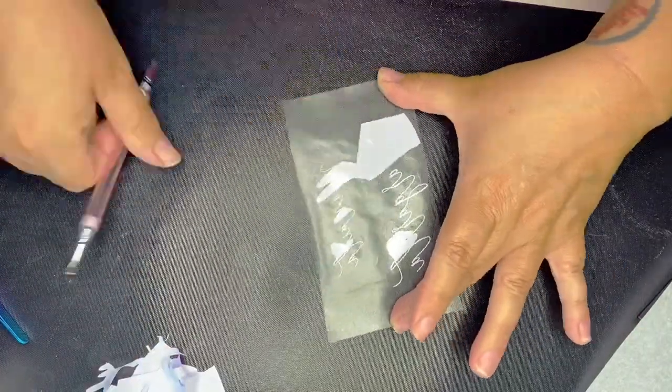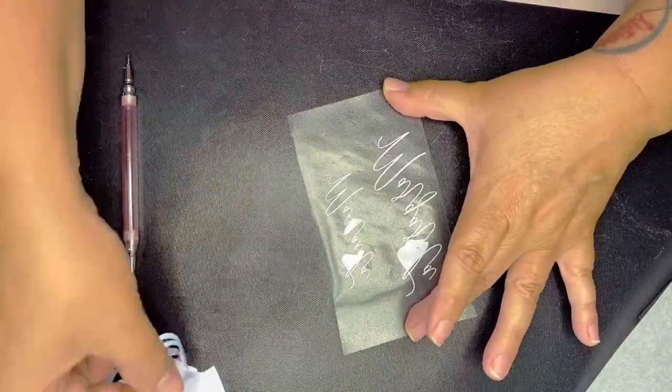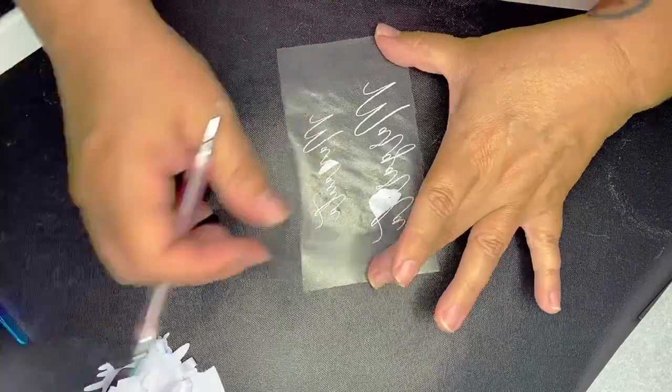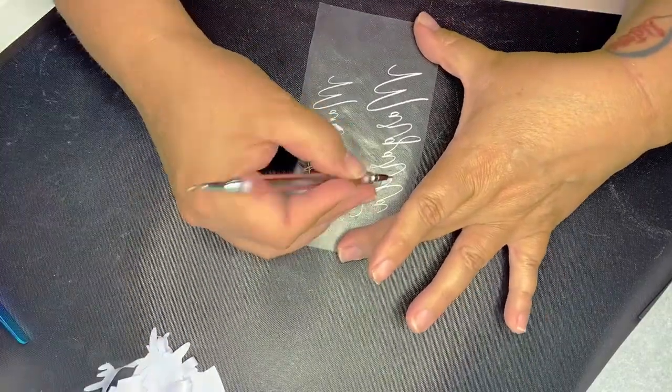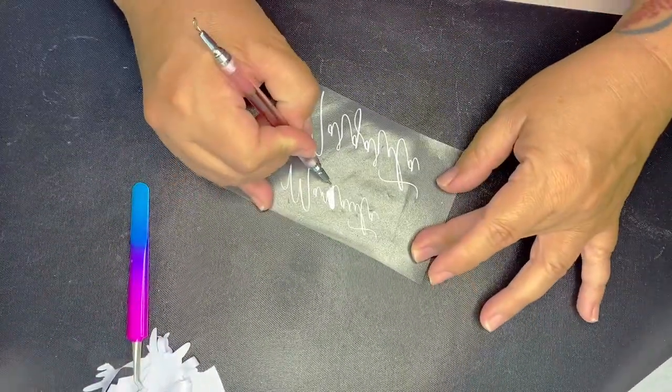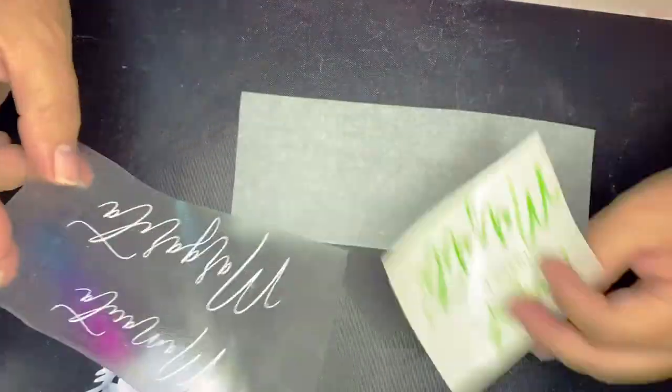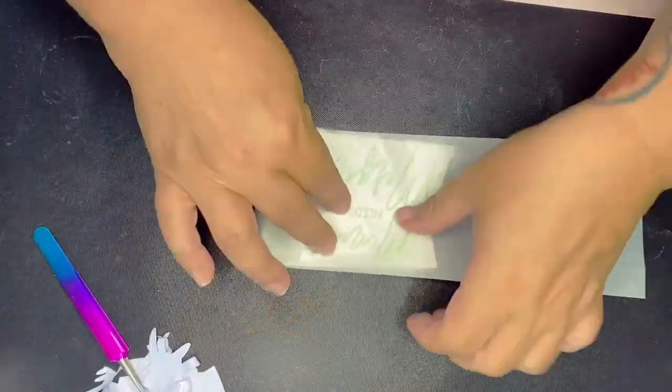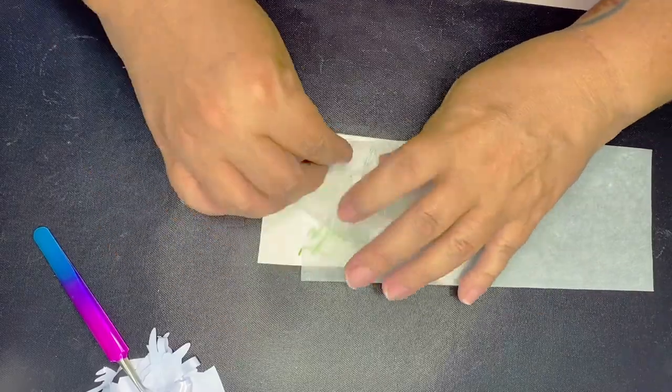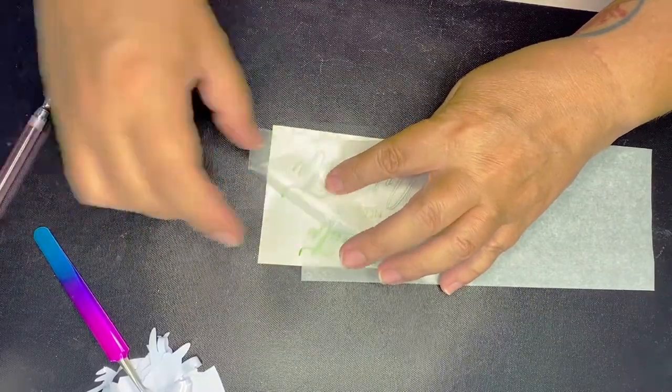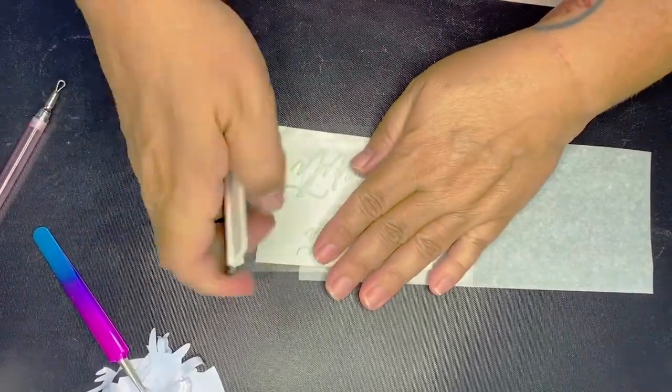So reverse weeding by just putting your transfer tape down straight onto your decal, turn it over and then remove what you normally would first. So put all of it onto your transfer tape and then take it off. It makes it much easier to keep all those small details intact.